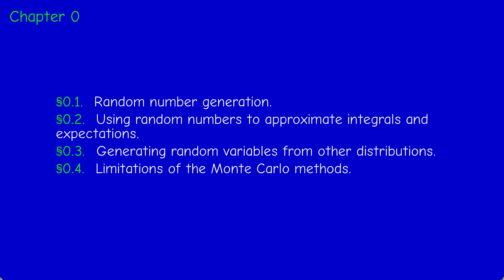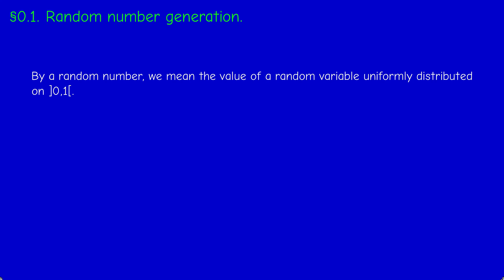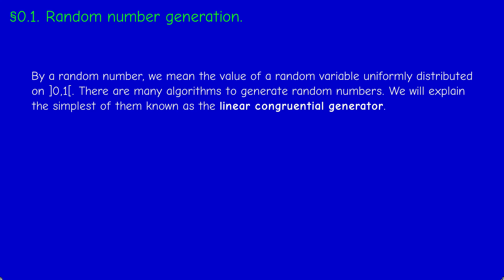All these things are based on the core notion of random number generation: the ability to generate uniform random numbers distributed on the interval [0,1]. If you know how to do that, you will later learn in Section 0.3 how to generate other distributions from the uniform distribution on [0,1]. By a random number we mean the value of a random variable uniformly distributed on [0,1]. There are many algorithms for this, and today I'll explain the simplest one — the linear congruential generator.